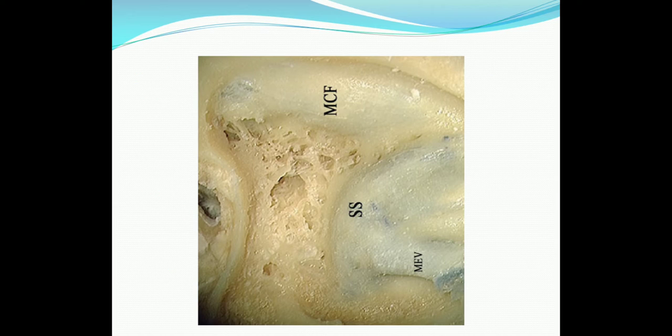Definition: Lateral sinus thrombophlebitis is the inflammation of the inner wall of the sigmoid sinus with formation of an intra-sinus thrombus, which usually occurs as a complication of acute mastoiditis.